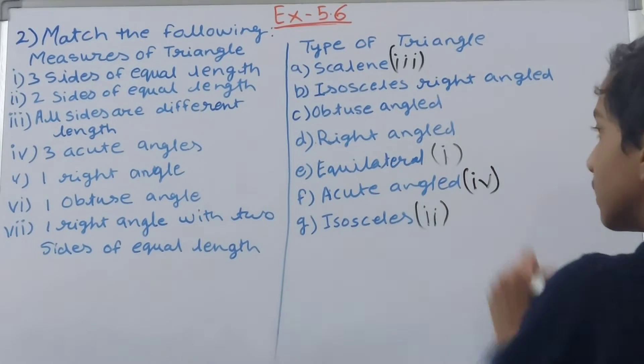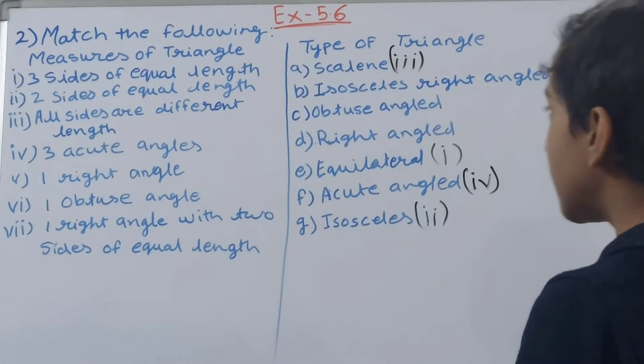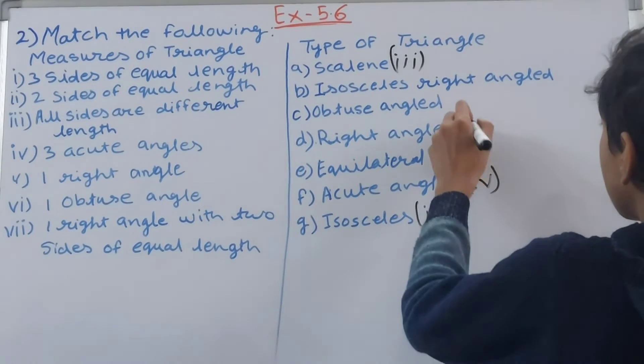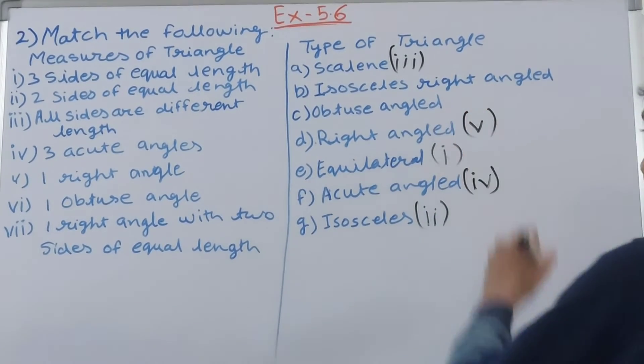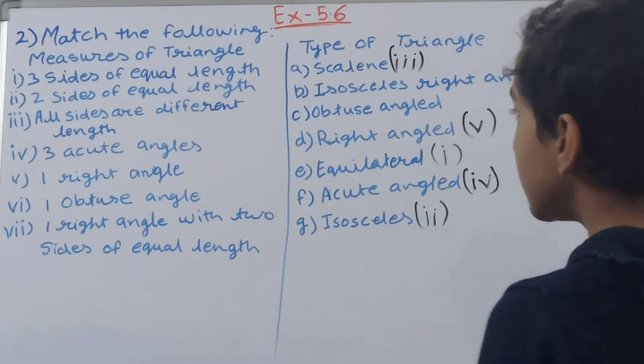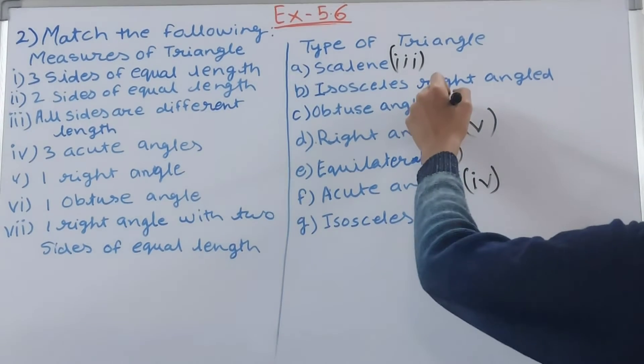Then next is one right angle, that is a right angle triangle. Then one obtuse angle, it's an obtuse angle triangle.